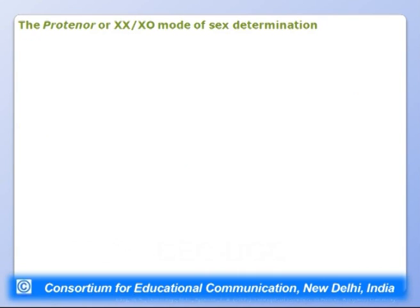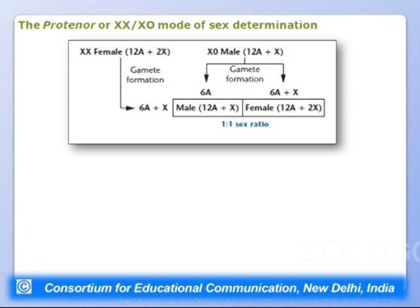Wilson also worked on Protenor, a butterfly, and found another mode: XO sex determination. The female is XX (12 autosomes plus 2 sex chromosomes), while the male has only a single X chromosome (12 autosomes plus one X) — no Y chromosome. Gametes produced by males contain either 6 autosomes plus 1X or 6 autosomes with no X, analogous to the Turner syndrome condition. When combined, males and females are again produced in a 1:1 ratio. This is termed the XX/XO mode of sex determination.